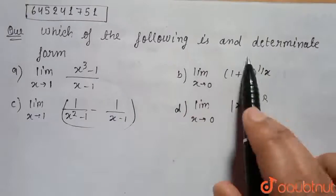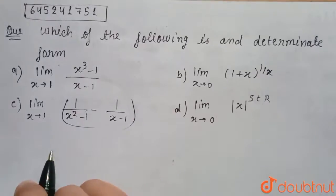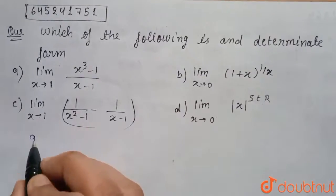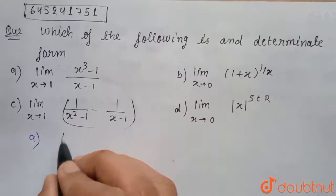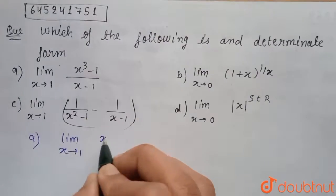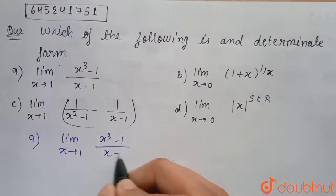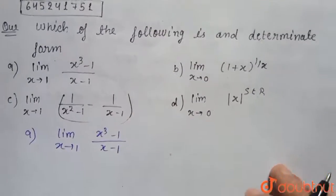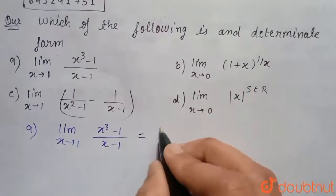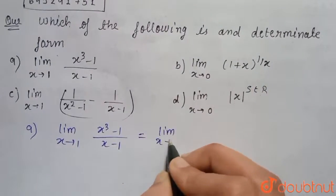The question is: which of the following is an indeterminate form? We have to check all the options. First, checking option A, which is the limit as x tends to 1 of (x³ - 1) / (x - 1).